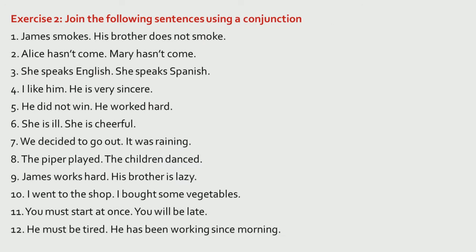Next exercise: join the following sentences using a conjunction to make one single sentence. 'James smokes; his brother does not smoke.' 'Alice hasn't come; Mary hasn't come.' 'She speaks English; she speaks Spanish.' 'I like him; he is very sincere.' 'He did not win; he worked hard.' 'She is ill; she is cheerful.' 'We decided to go out; it was raining.' 'The piper played; the children danced.' 'James works hard; his brother is lazy.' 'I went to the shop; I bought some vegetables.' 'You must start at once; you will be late.' 'He must be tired; he has been working since morning.'